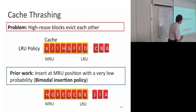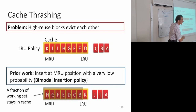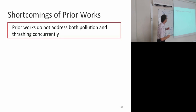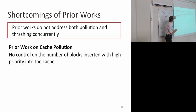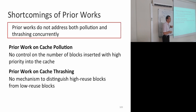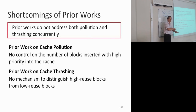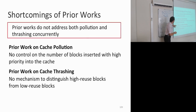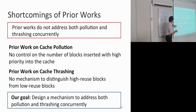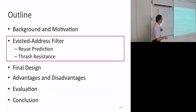But there are shortcomings to these prior works: they don't address both pollution and thrashing concurrently. Works on cache pollution don't control the number of blocks inserted with high priority into the cache, so they don't handle cache thrashing. For cache thrashing, you need to control the number of blocks inserted with high priority; otherwise you thrash your cache. Prior work on cache thrashing doesn't distinguish between high reuse and low reuse blocks. So we're going to try to get the best of both worlds and design a mechanism that addresses both cache pollution and thrashing concurrently.